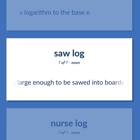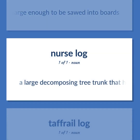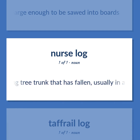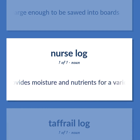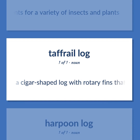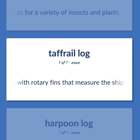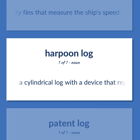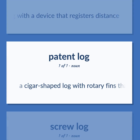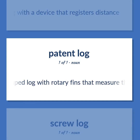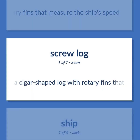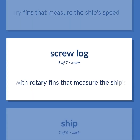Log: log large enough to be sawed into boards. A large decomposing tree trunk that has fallen, usually in a forest — the decaying wood provides moisture and nutrients for a variety of insects and plants. A cigar-shaped log with rotary fins that measure the ship's speed. A cylindrical log with a device that registers distance.